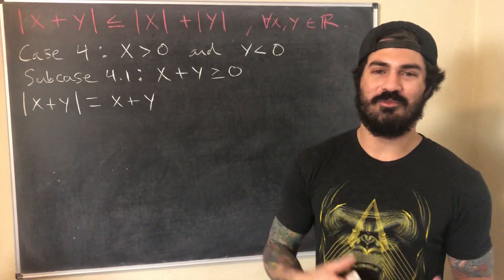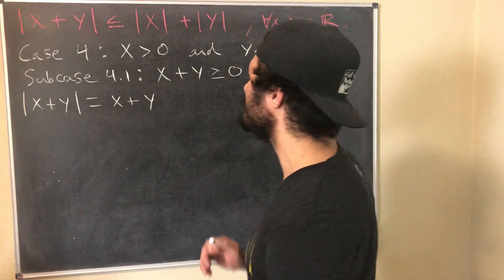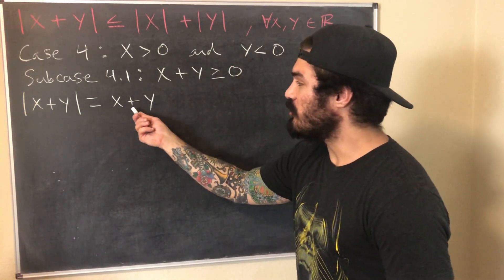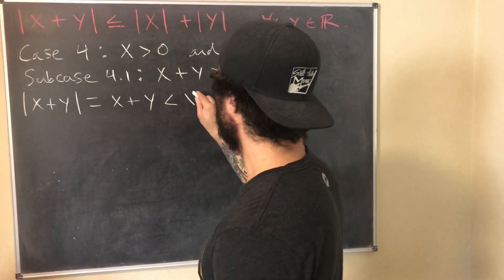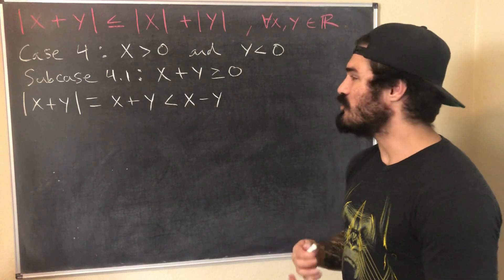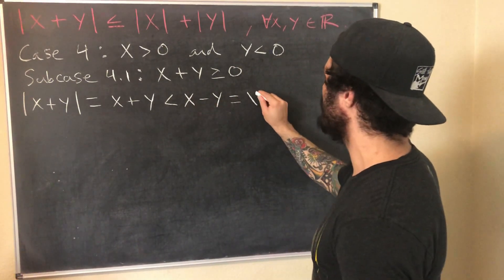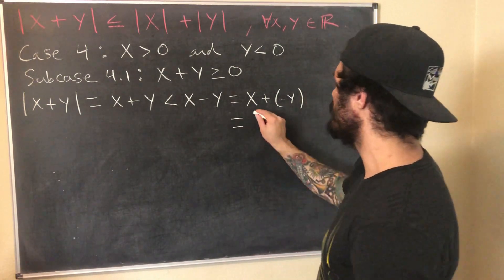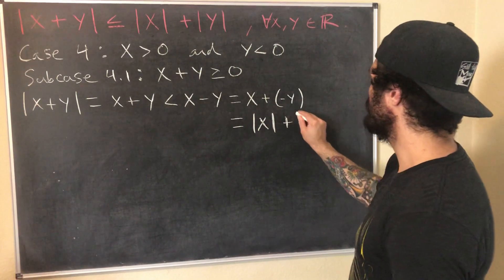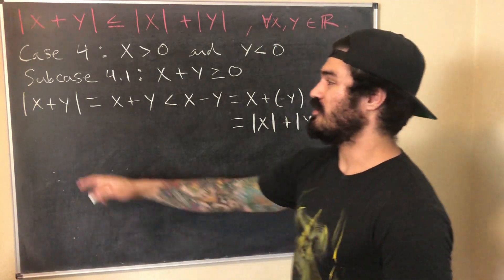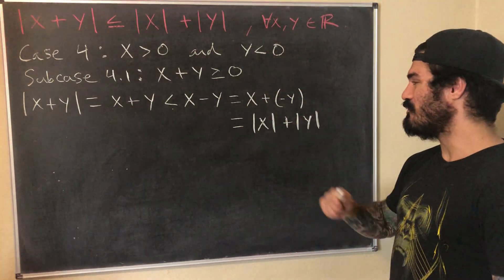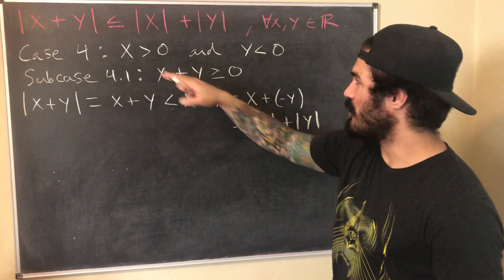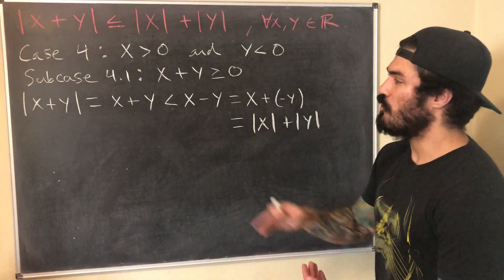Since y < 0, adding y to x is less than subtracting a negative, so x + y < x + (−y) = x − y. We can rewrite x − y as x + (−y), and since y < 0, by the definition of absolute value −y = |y|. So |x + y| = x + y < x + (−y) = |x| + |y|. Therefore |x + y| < |x| + |y| in this sub-case.